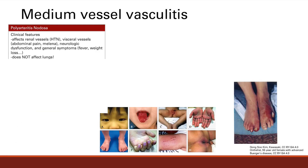Moving to medium vessel vasculitis, the first is polyarteritis nodosa. Polyarteritis means many arteries are involved, which is reflected in the symptoms. You hit the radial vessels, the visceral vessels — causing abdominal pain and melena. Renal vessels are affected, causing hypertension, because reduced blood flow to the kidney triggers renin release to increase blood pressure.